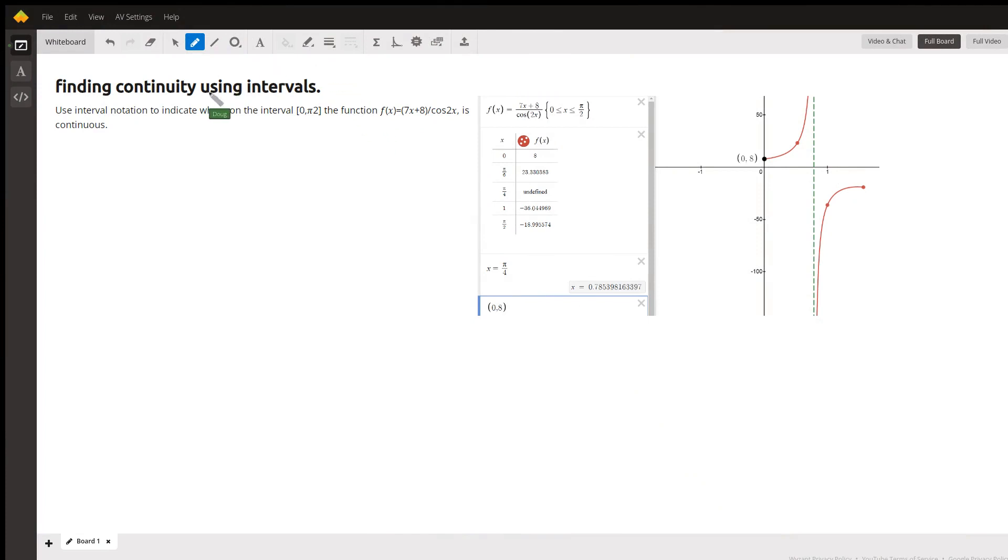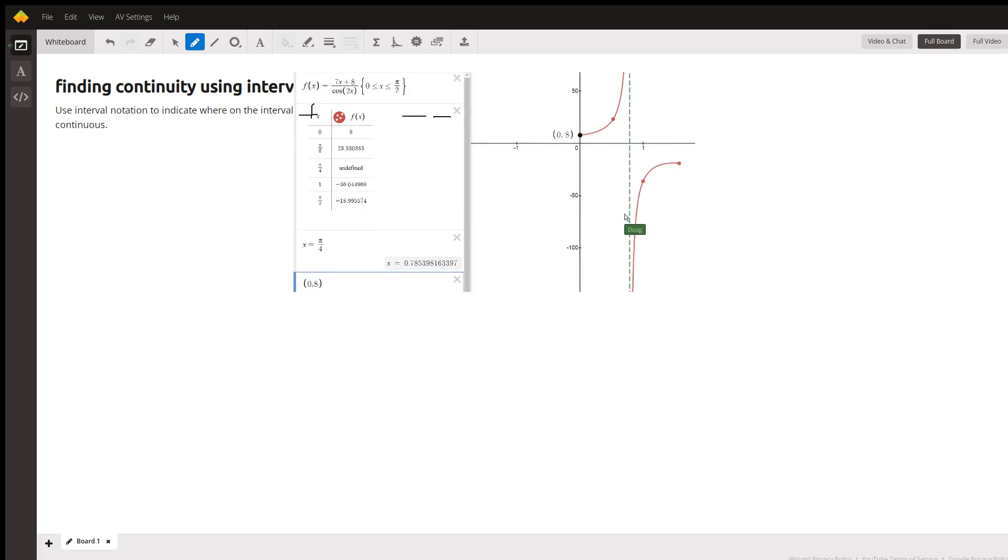You're given the function f(x) equals 7x plus 8 in the numerator divided by the cosine of 2x in the denominator, and asked to determine when is that function continuous on the interval from zero to π over 2.